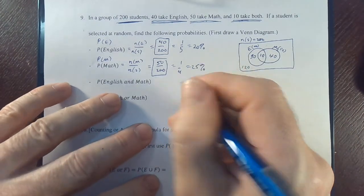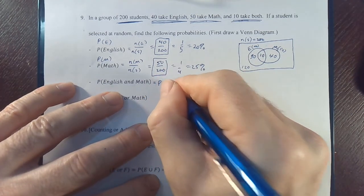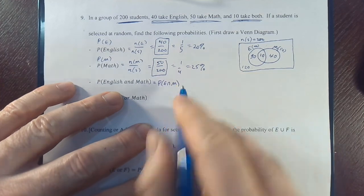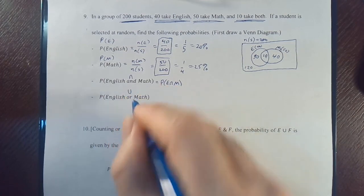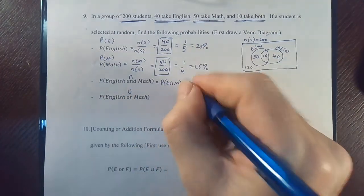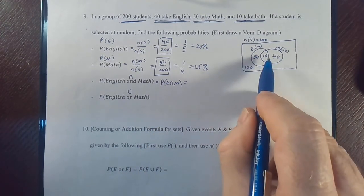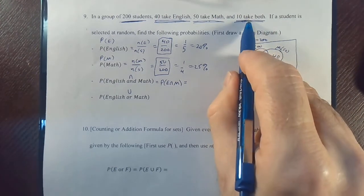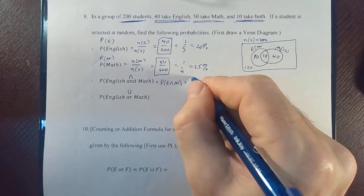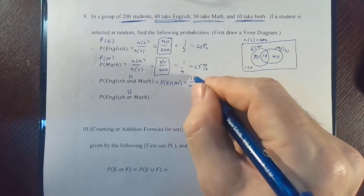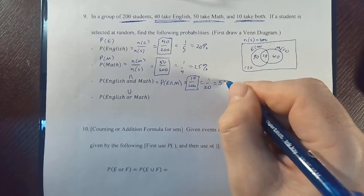The probability of English and math — P(E ∩ M) — is the probability of being in the intersection. 'And' means intersection; 'or' means union. The football region contains 10 students, so P(E ∩ M) = 10/200, which reduces to 1/20, or 5%.